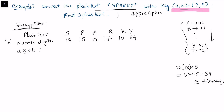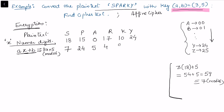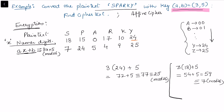So for x=18, the ciphertext digit is 7. Applying 3x + 5 mod 26 to the remaining letters, we get the digits: 7, 24, 5, 4, 9, 25. To verify the last one, Y (x=24): 3×24 + 5 = 72 + 5 = 77. Then 77 − 52 = 25, and 52 is divisible by 26, so 77 ≡ 25 mod 26.